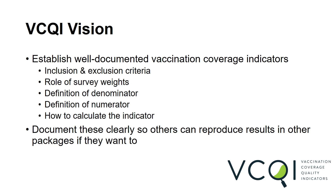Another part of the vision is to be very clear about the indicators or outcomes that VIKI calculates. We have written descriptions and specifications to make it clear which respondents are included in or excluded from the calculation, which indicators are weighted and how that works, and in the case of proportions or rates, how the denominator and numerator are defined and how the outcome is specifically calculated. We hope the documentation is clear enough for others to reproduce results outside of VIKI or using another package if they wish.